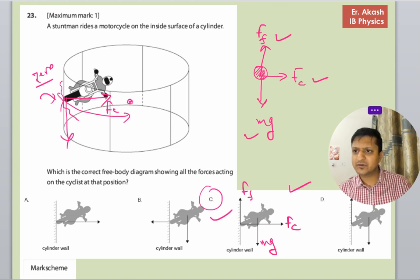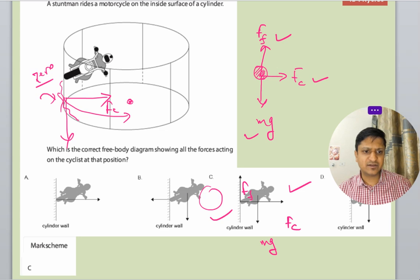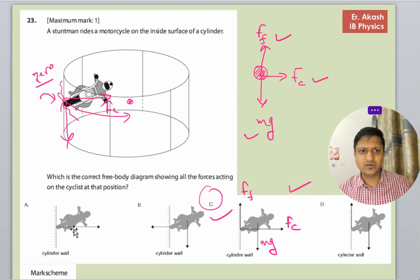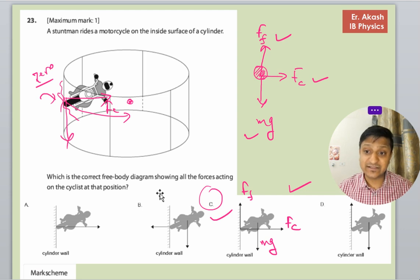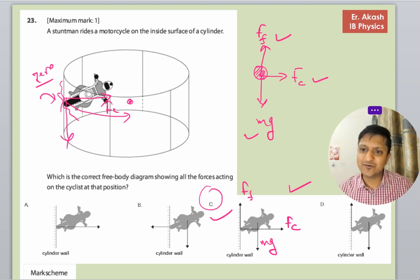C option will be the right option. We will check the mark scheme. Mark scheme says C option is right. So whenever there are questions like this, just see what are the forces acting on the body and the directions in which these forces are acting, you will get the right answer. Thank you for watching this video.